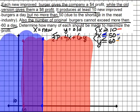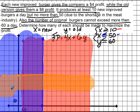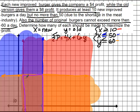Our last inequality is Y less than or equal to 60, which is a horizontal line through 60 on the y-axis. We count up by tens to 60 and draw the horizontal line. We shade everything below that line because we want all y values less than or equal to 60. If you look, we now have one area where everything overlaps — a region we can shade in a different color to make it easy to see.